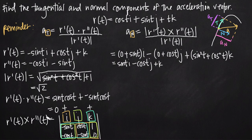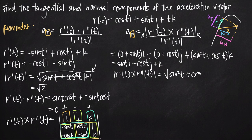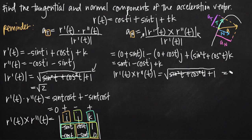That's our cross product, but the formula requires the magnitude of the cross product. Taking the magnitude: the square root of sine squared t plus cosine squared t plus 1 squared. Sine squared t plus cosine squared t equals 1, so we get the square root of 1 plus 1, which is the square root of 2.